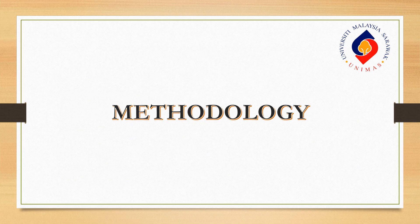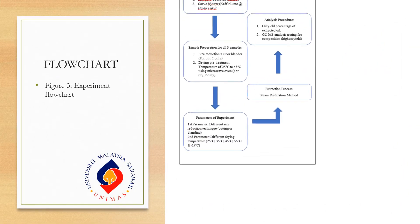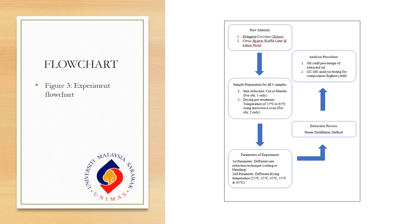We continue with the methodology, looking at the flowchart shown in Figure 3. There are five steps in the flowchart. The first is obtaining the raw material, followed by sample preparation. For each objective, only one influence on the oil yield will be examined. Then we have the experimental parameters — different size reduction techniques and different drying conditions — followed by the extraction process, and finally the analysis procedure.